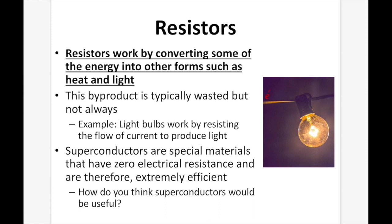Light bulbs work by resisting the flow of current to produce light. As electrons pass through the wire and reach the light bulb, much of their energy is taken away because the electrons are slowed down, so they leave with much less energy than when they came in. Superconductors are special materials that have zero electrical resistance and are therefore extremely efficient. How do you think superconductors would be useful — what benefits come from having very low resistance?